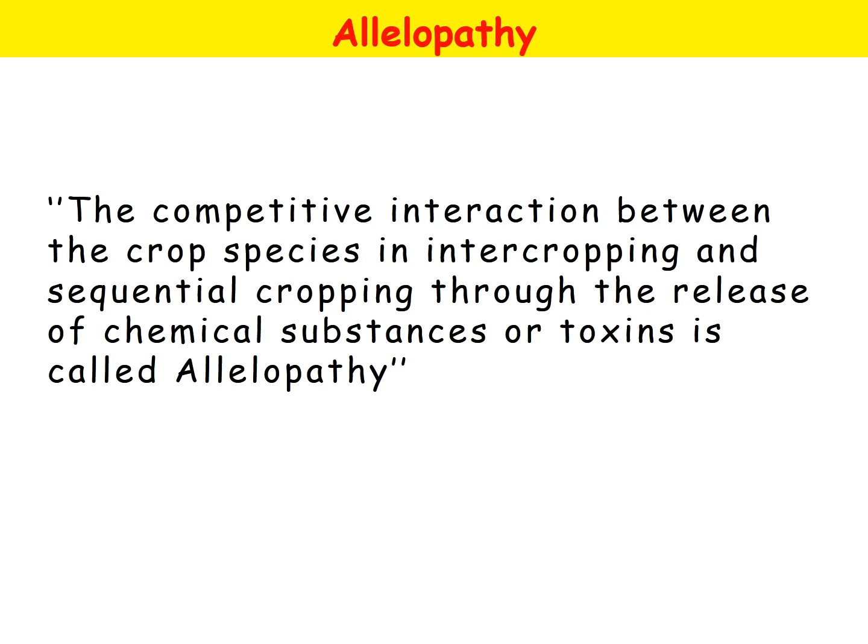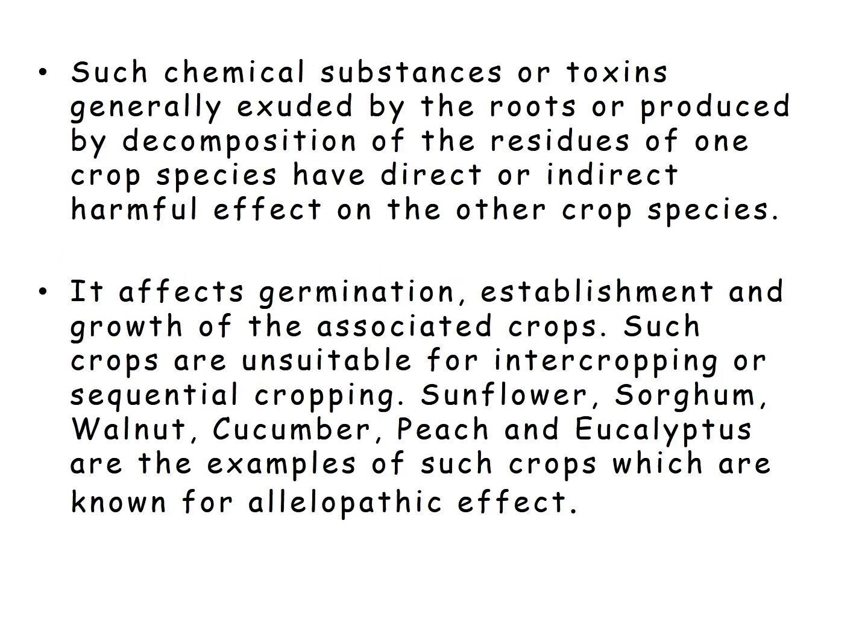When we intercrop, we have two species, and in those two species there is competition. One crop species releases a chemical substance that is harmful to the other species. Such chemical substances or toxins are generally exuded by the roots or produced by the decomposition of residues of one crop species, and they have a direct or indirect harmful effect on the other crop species.